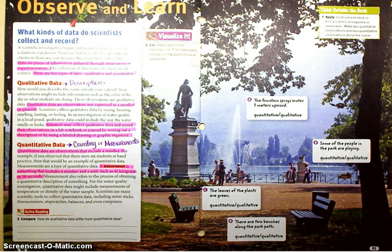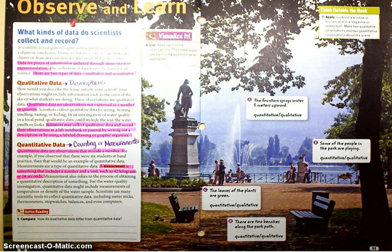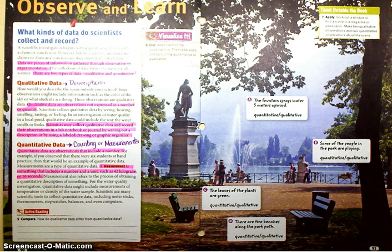In the first paragraph, I highlighted where it says: data are pieces of information gathered through observation or experimentation. I also highlighted the last sentence that says there are two types of data, qualitative and quantitative. For the first red heading, qualitative data, I put an arrow out to the side and reminded myself that it means descriptions — data that are descriptions. I highlighted the sentence that said qualitative data are observations not expressed as a number or quantity. I also highlighted the last sentence: scientists may collect qualitative data and record their observations in a lab notebook or journal by writing out a description or by using a labeled drawing or graphic organizer.